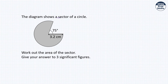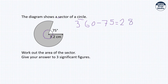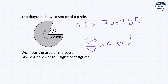A sector where the given angle is 75° — but we want the reflex angle, so the sector angle = 360 − 75 = 285°, with radius 3.2 cm. Area = (285 ÷ 360) × π × 3.2² ≈ 25.5 centimetres squared to three significant figures.